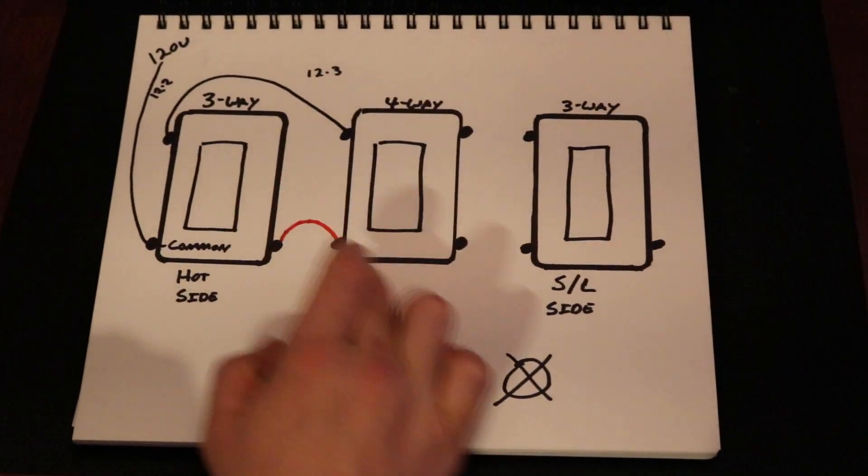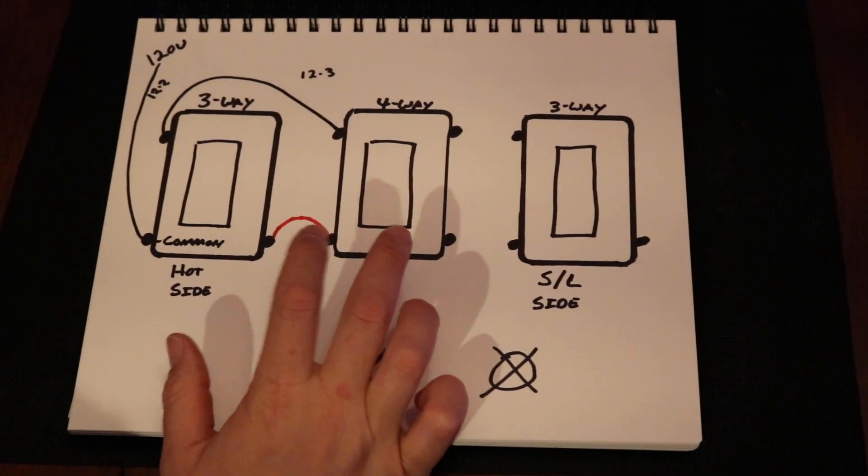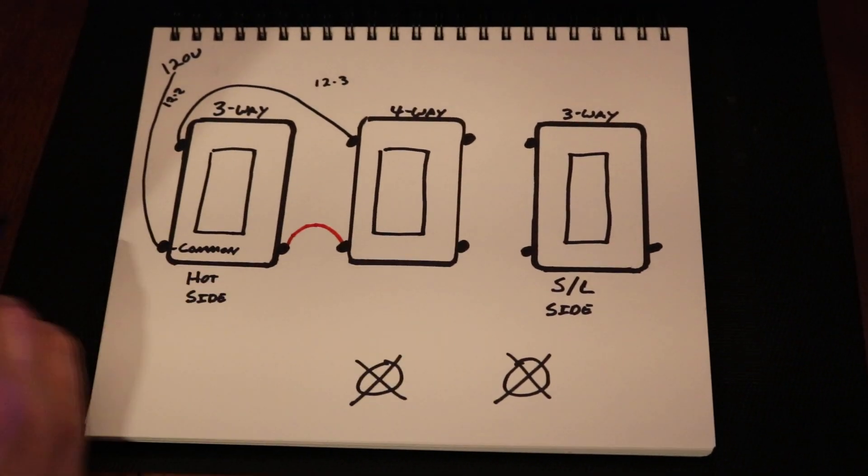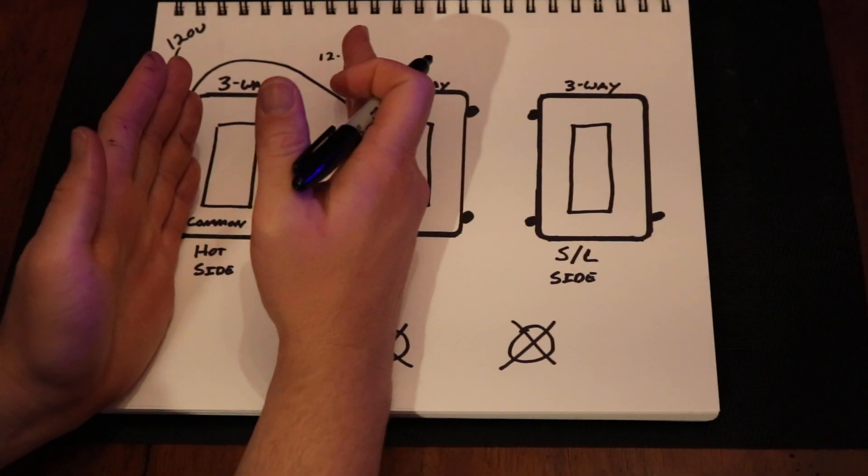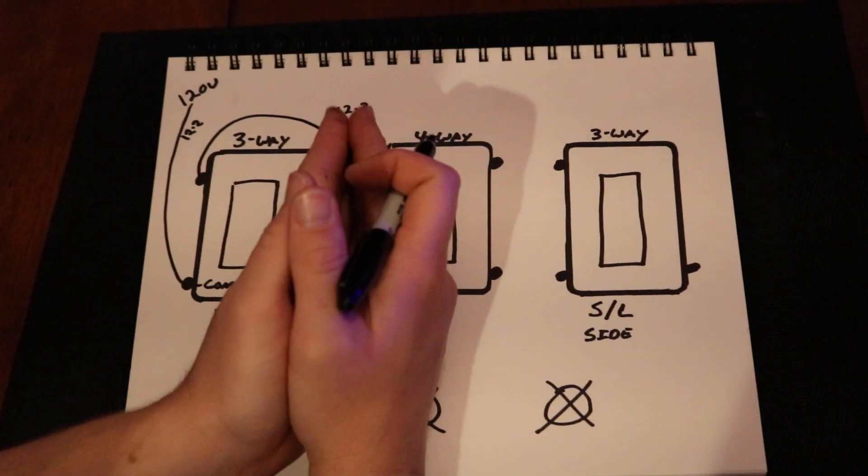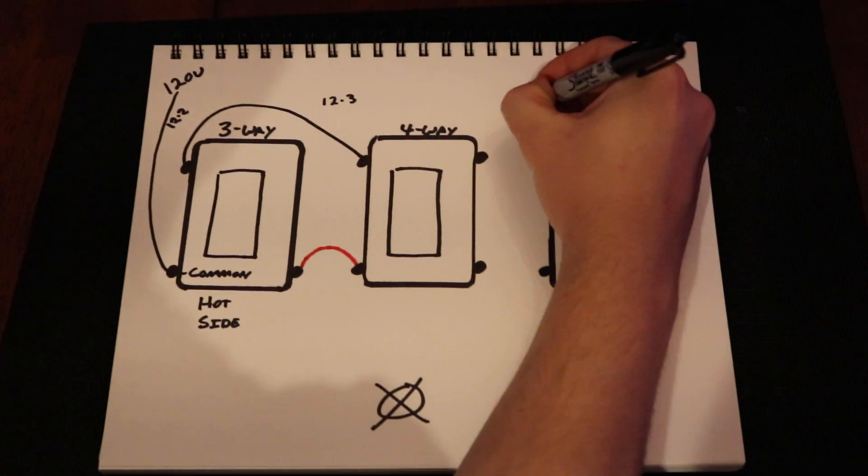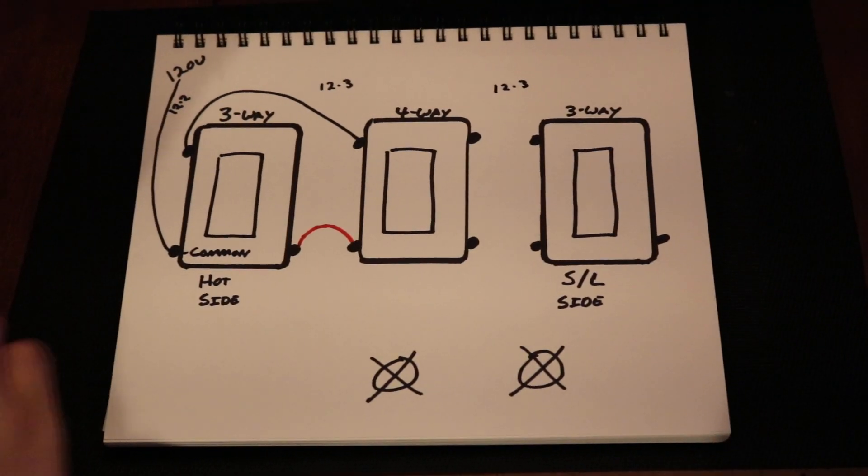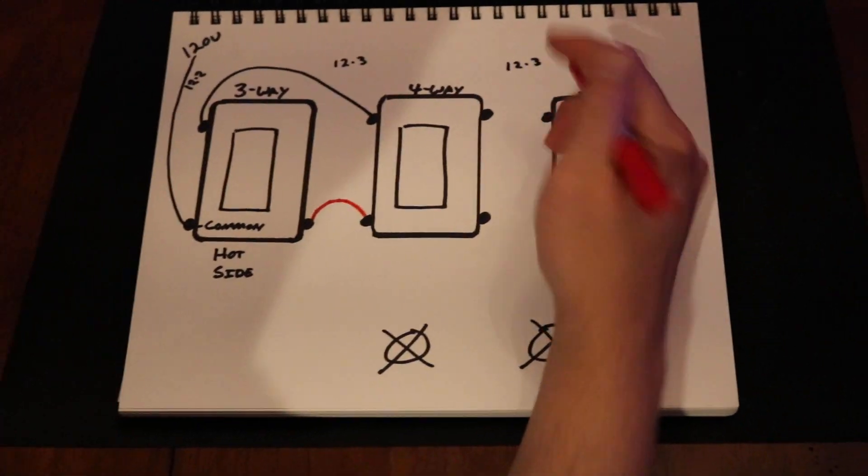You're going to have two conductors going from your hot side to your four-way location. One way to wire a four-way switch where it's foolproof, it'll never be a problem, it'll work every time: you have your incoming travelers, your two conductors. If you put them on one side of the switch, where here we're putting it on the left side, and the travelers that are outgoing, let's just say 12-3, pretend we're doing it in a residential.